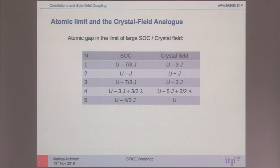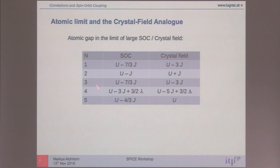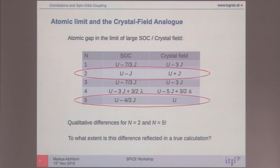We can do something in the large limit of spin-orbit coupling or crystal field. I introduce either a spin-orbit coupling or a tetragonal crystal field — not both at the same time. You can calculate the atomic charge gap in this limit. For n=1, n=3, n=4 the structure is very similar with changes in pre-factors, but there are two differences: at n=2 and n=5. At n=2, the role of the Hund's coupling changes sign.